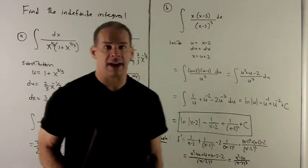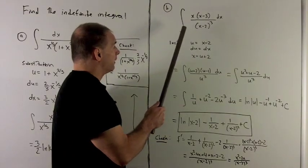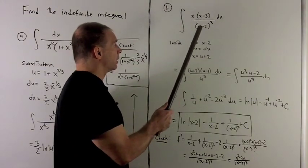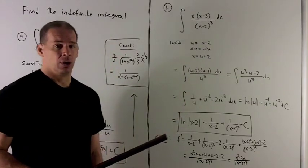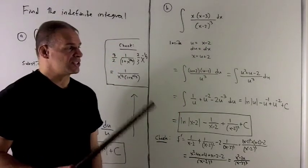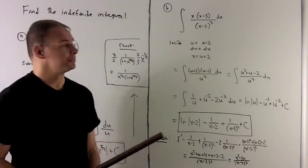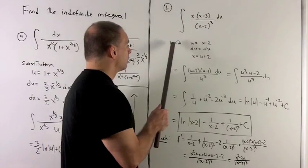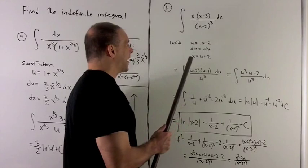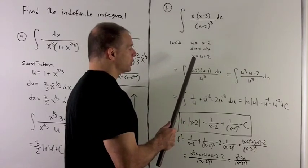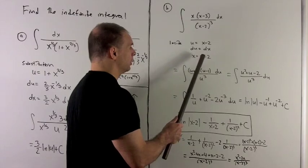For my second indefinite integral, we want to take the indefinite integral of x times x minus 3 over x minus 2 cubed. Note here, we don't need to do a long division — this is set up so that a u substitution will work immediately. For my inside, I let u be equal to x minus 2, so du equals dx. And we'll notice when we substitute that we'll need x, so x is going to be equal to u plus 2.